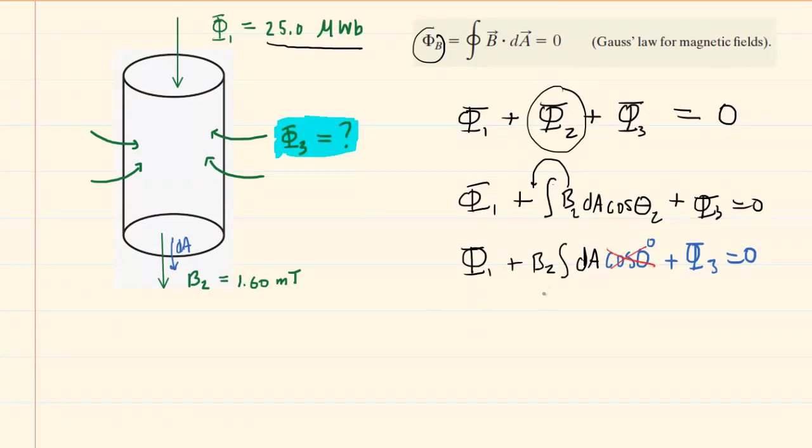So then you're left with just the integral of dA, but the integral of dA from calculus is just the area. So basically, we're going to be using the area of this lower surface in our calculation. So putting that all together, we'll just have B2 times the area at surface two.